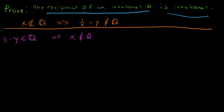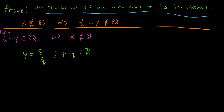So we start with this assumption. We'll assume that y is an element of the rationals, meaning it can be expressed as p over q, where p and q are integers. This is just the definition of what it means to be a rational number — you can express it as the ratio between two integers. So if y is rational, then that means y equals p over q. But realize that would mean, since y is the reciprocal of x, that 1 over x is also equal to p over q.